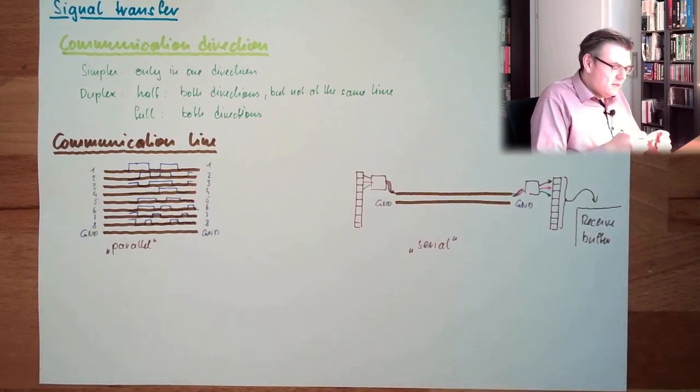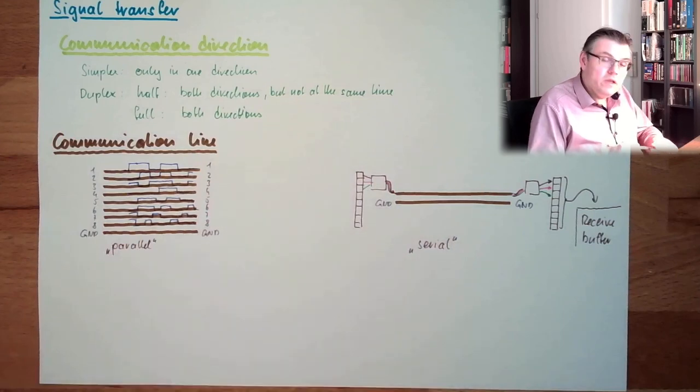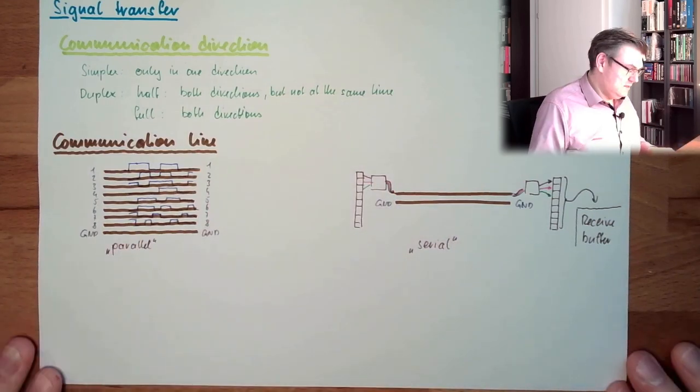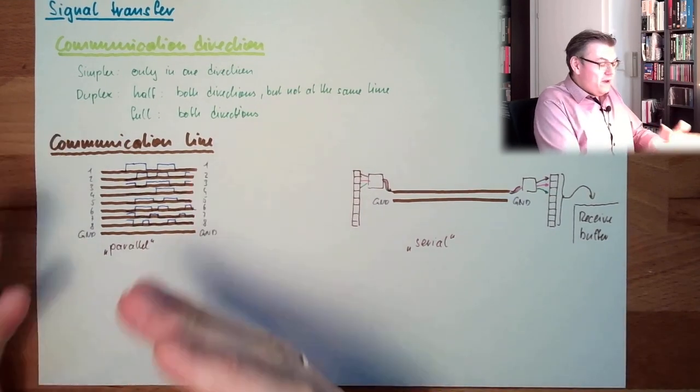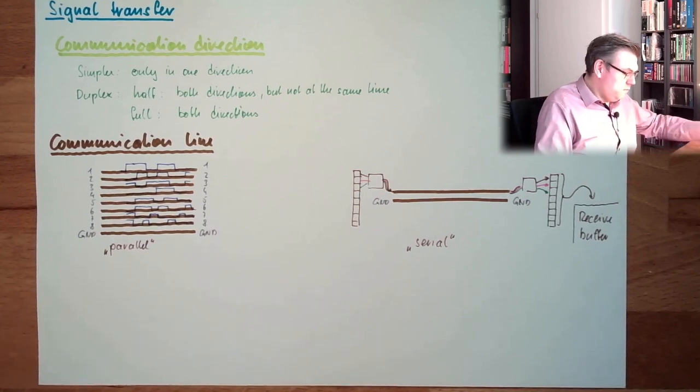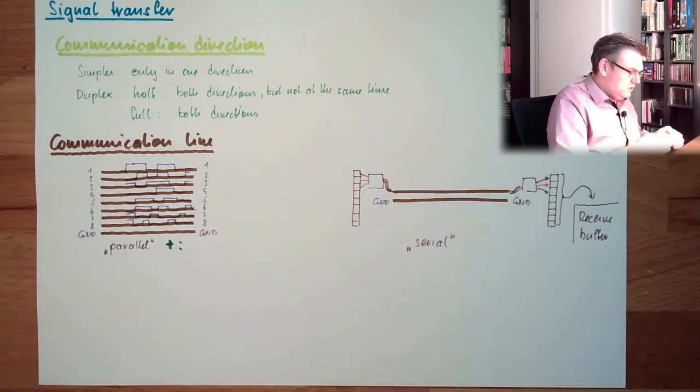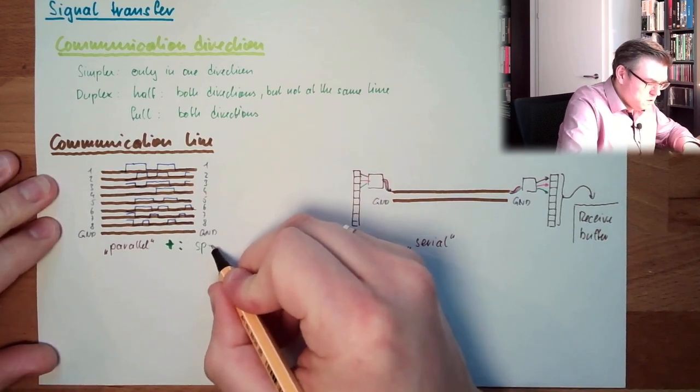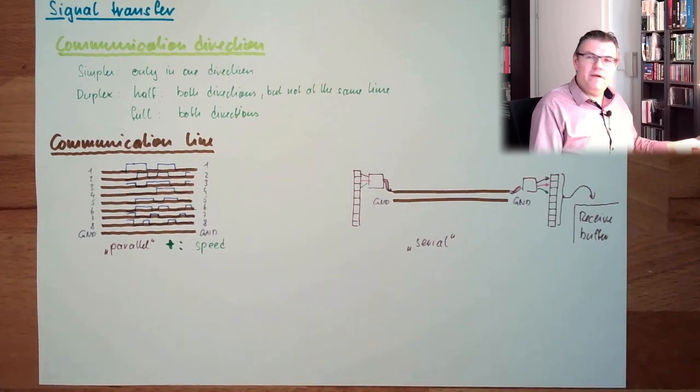This communication is called serial. Clear? Because here all bits are in parallel at the lines, and here only one bit after the other, in series. Serial communication. What is the big benefit of this one? Speed. There's nothing faster than parallel communication. If you look, all things at the same time, it's fast.